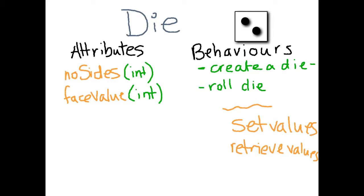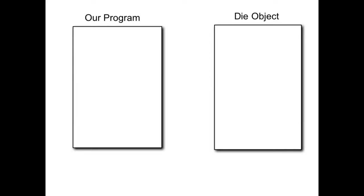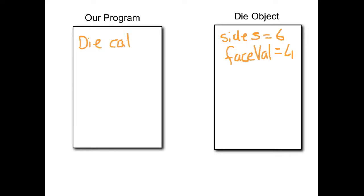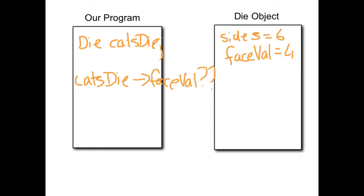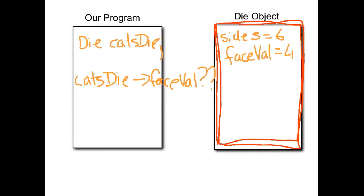I'm going to give a little pictorial representation of how the die object relates to our code. We have one piece of code which is our program and another which is our die object. The die object has six sides and a current face value of four — that's contained within the die object. So in our program, if we had a die called cat's die, we would need to create it, and then to find out what the face value is, we would need to ask cat's die what its face value is. Our code just talks to the object to give and get information.